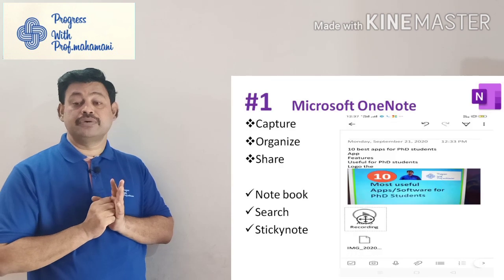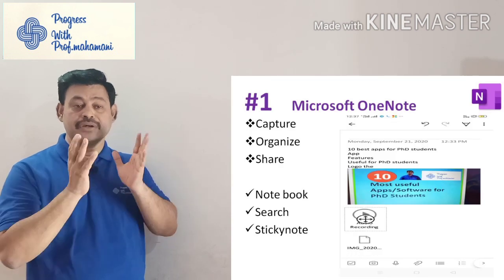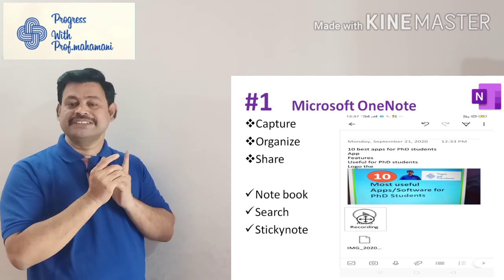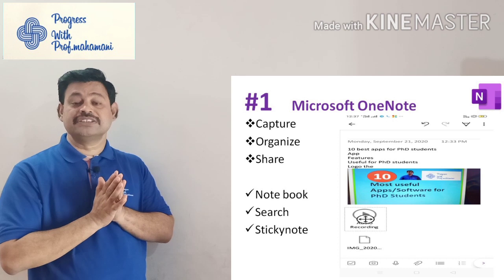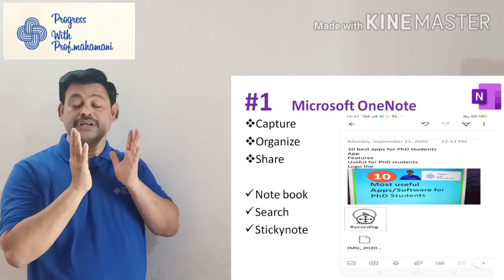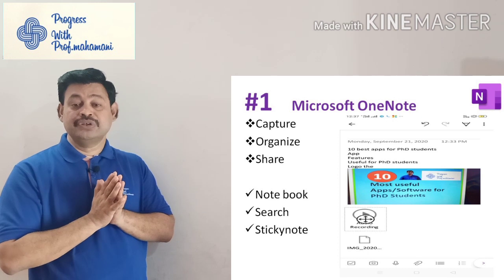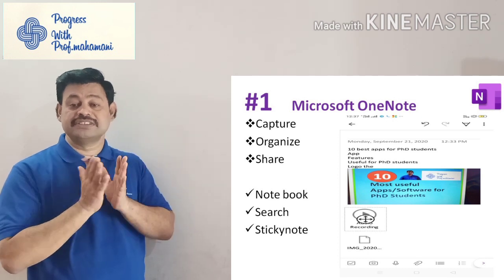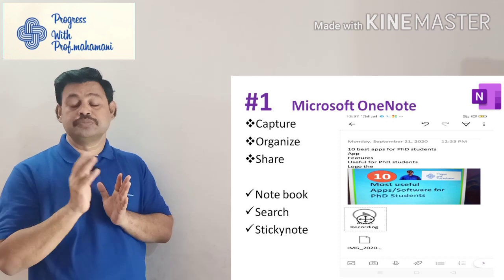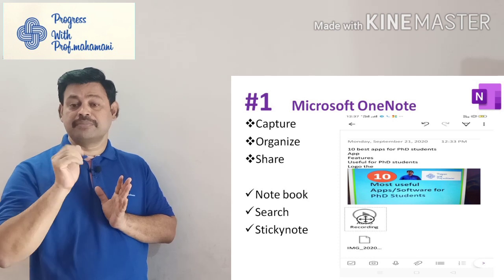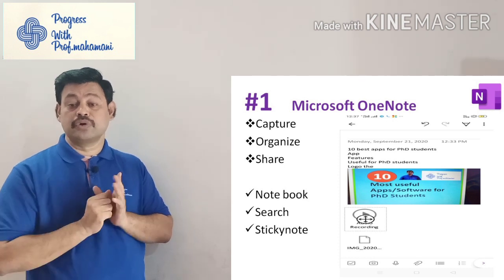The first software is Microsoft OneNote. This is a Microsoft Office tool along with Word, PowerPoint, and Excel. It is not recognized by many people but it is a very good tool for research scholars. Using this you can capture pictures, organize, and share notes with your supervisor or your research team. Here I have prepared my schedule as an example.